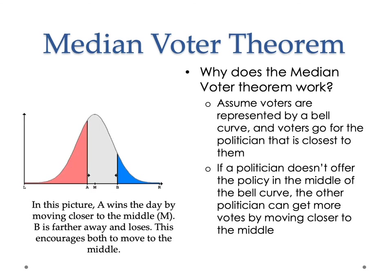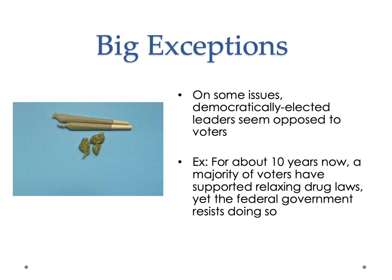If you look at the distribution of preferences, it could be that you have very polarized societies — instead of a bell curve, it looks like a camel with two different humps, so preferences don't distribute equally. So there are big exceptions to the median voter theory. On some issues, democratically elected leaders seem opposed to voters. For about 10 years now, a majority of voters have supported relaxing drug laws, but the federal government has not done this. Gun law is another example. Environmental regulation is another. If voters have a preference but don't vote on the basis of that preference, leaders are unlikely to be responsive to it. They may be more responsive to smaller groups that give them a lot of money.